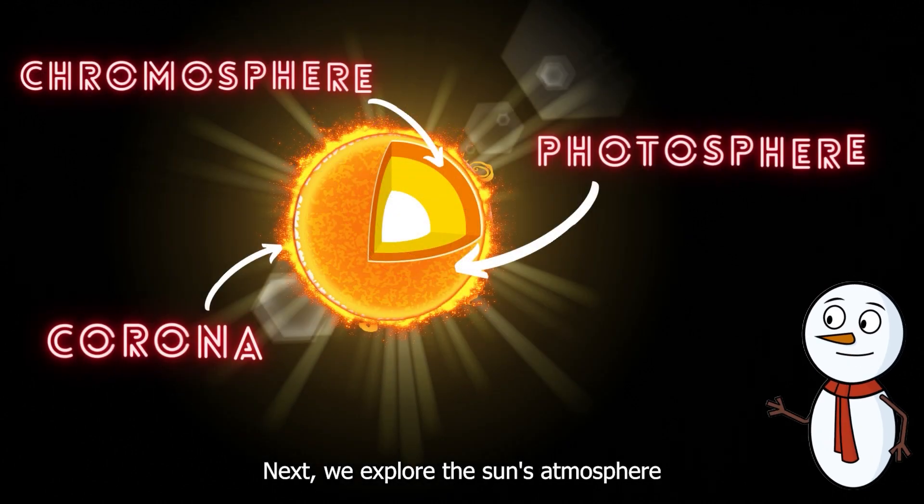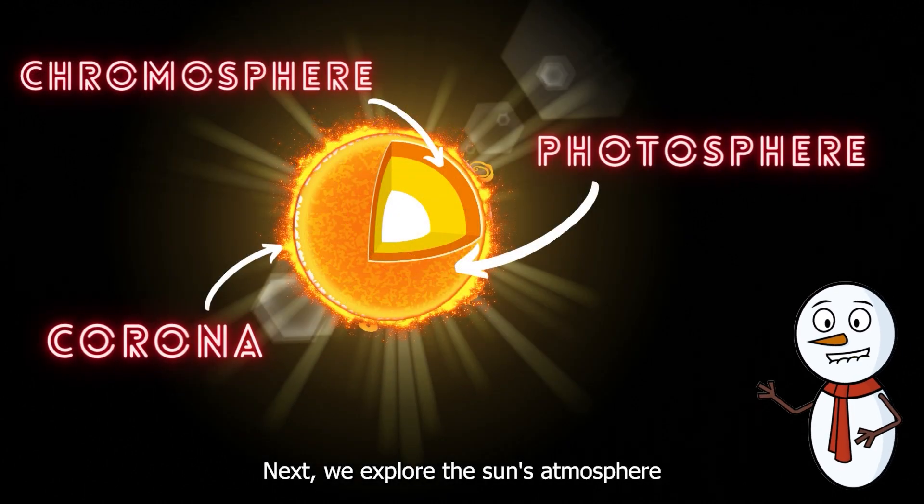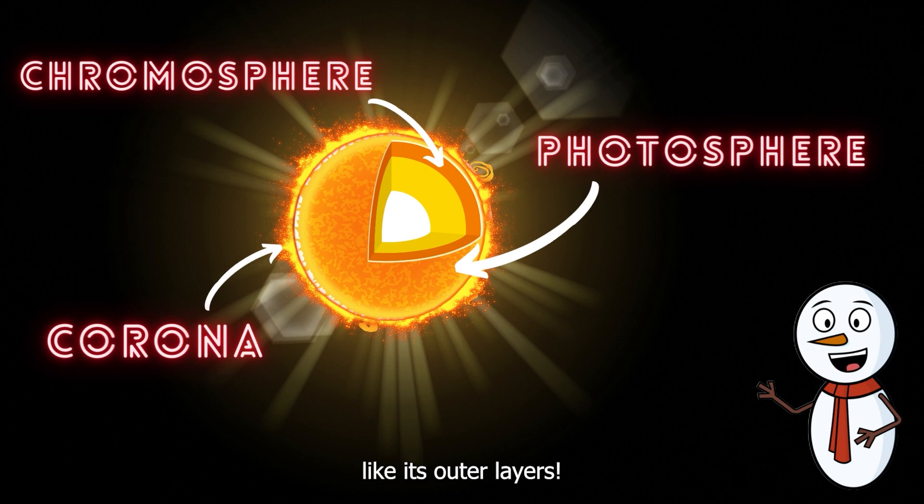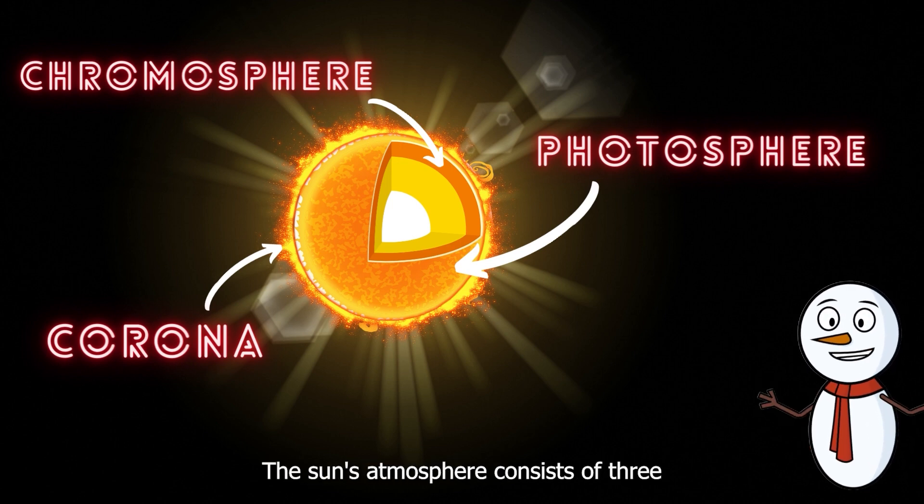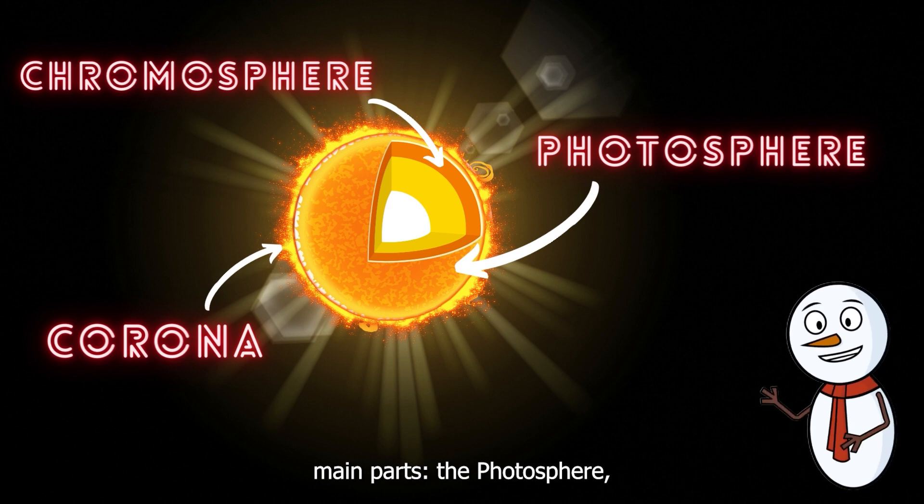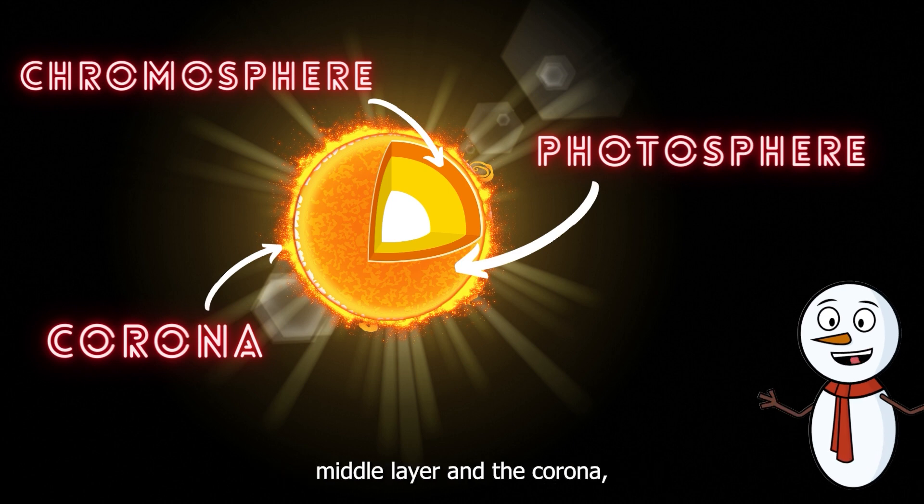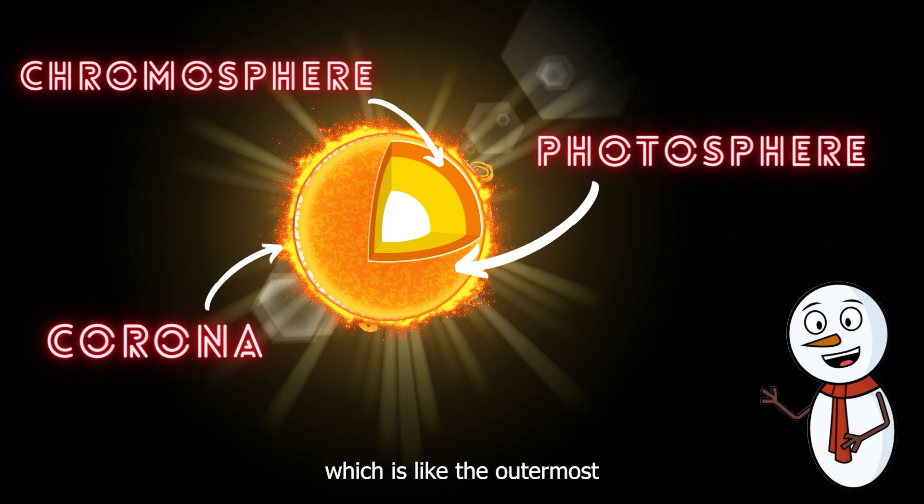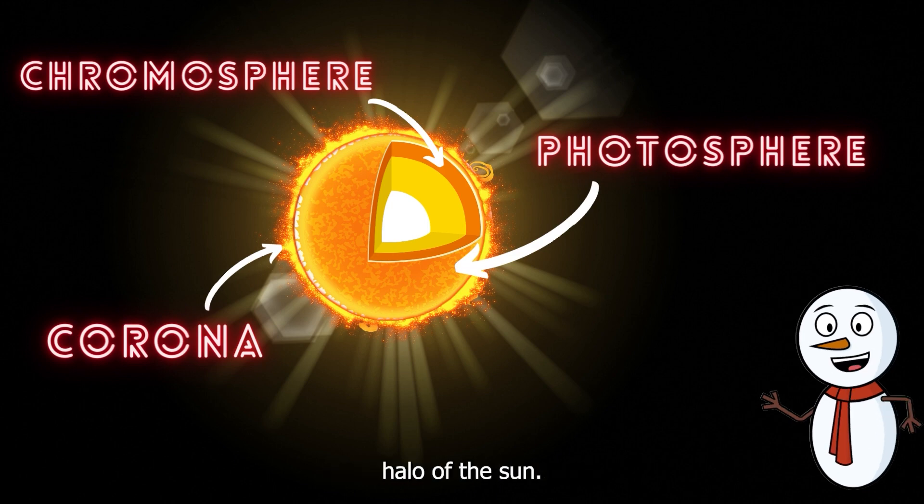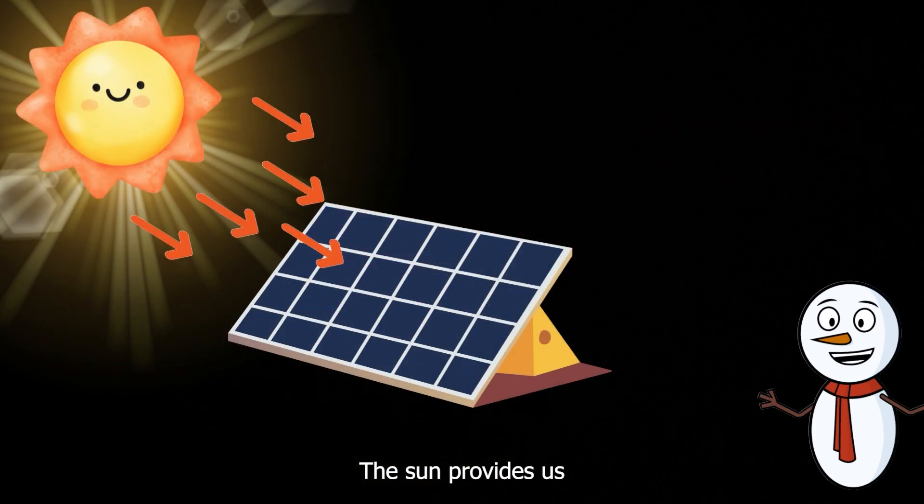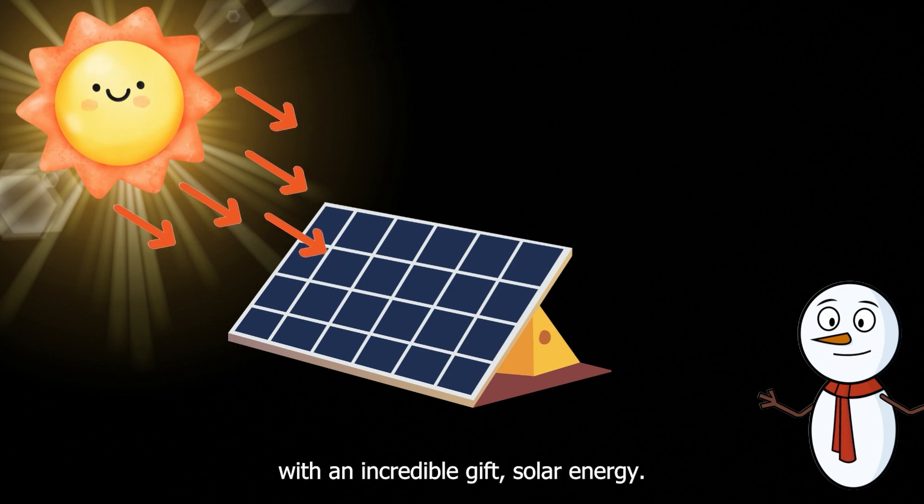Next, we explore the Sun's atmosphere, its outer layers. The Sun's atmosphere consists of three main parts: the photosphere, which is the visible surface we see; the chromosphere, which is like the Sun's atmosphere's middle layer; and the corona, which is like the outermost halo of the Sun.